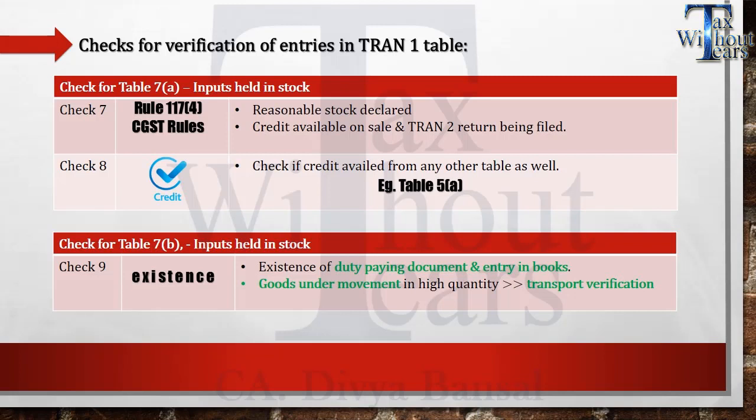Table Number 7B relates to inputs held in store. You must have the document showing tax payment and the entry in the books. This table addresses the situation where you paid taxes as per the previous tax regime but provided those inputs or goods after the appointed date, i.e., 1st July 2017, and entered those details in your books of accounts by a maximum of 31st July 2017.